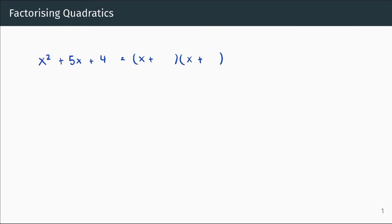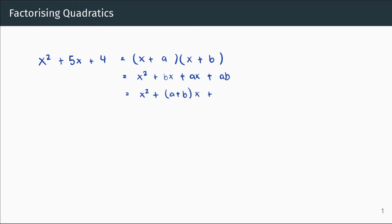Since we don't know what these numbers are, let's call them a and b. We can expand this expression to get x squared plus bx plus ax plus ab, which can be simplified to x squared plus (a plus b)x plus ab. This means that a plus b has to equal five, and ab has to equal four.